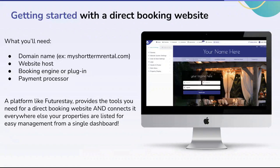What do you need to get started with a direct booking website? Contrary to popular belief, you don't need to know how to write a single line of code. The basic building blocks are: a domain name — for example, myshorttermalrental.com — a host for the website, a booking engine or plugin so people can complete reservations, and a way to take payments. A platform like FutureStay provides all of those tools in a single place, and you can connect it to everywhere else your properties are listed and manage everything from a single dashboard.